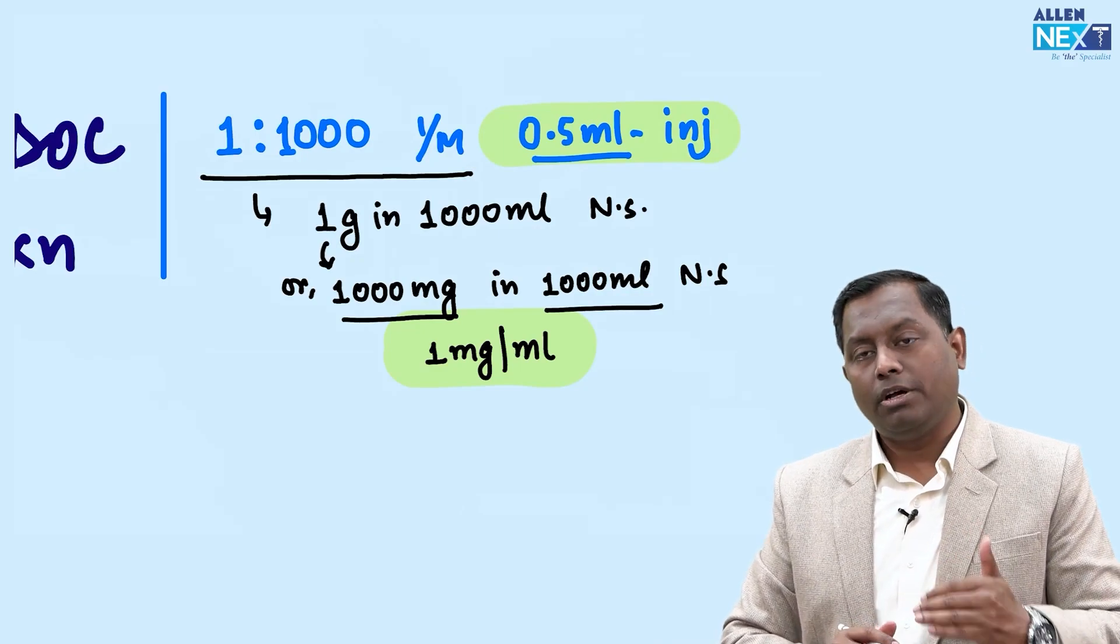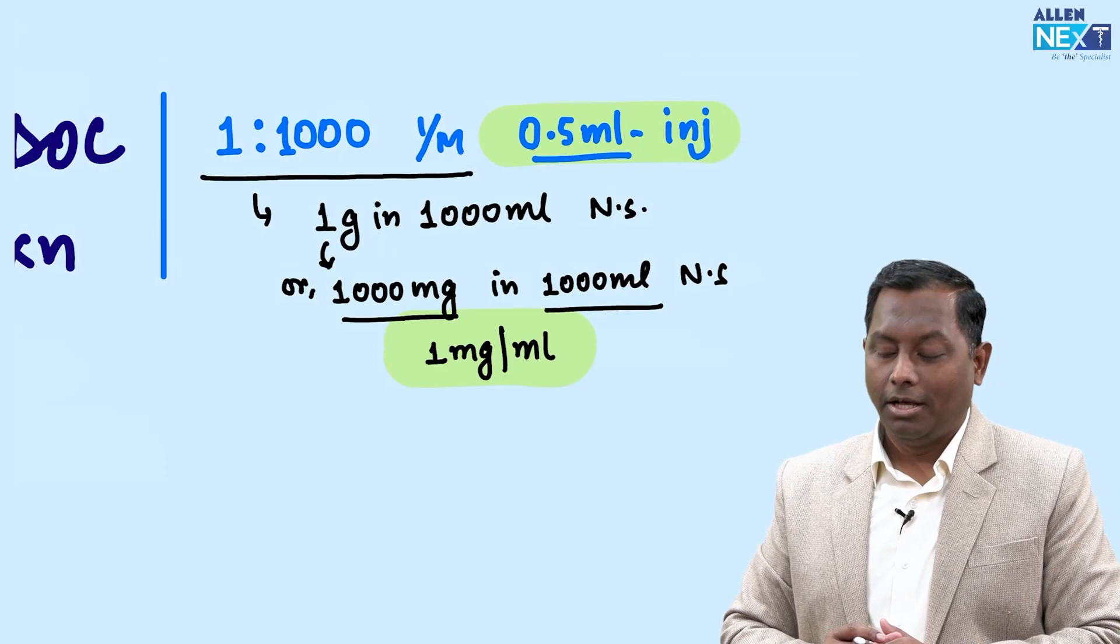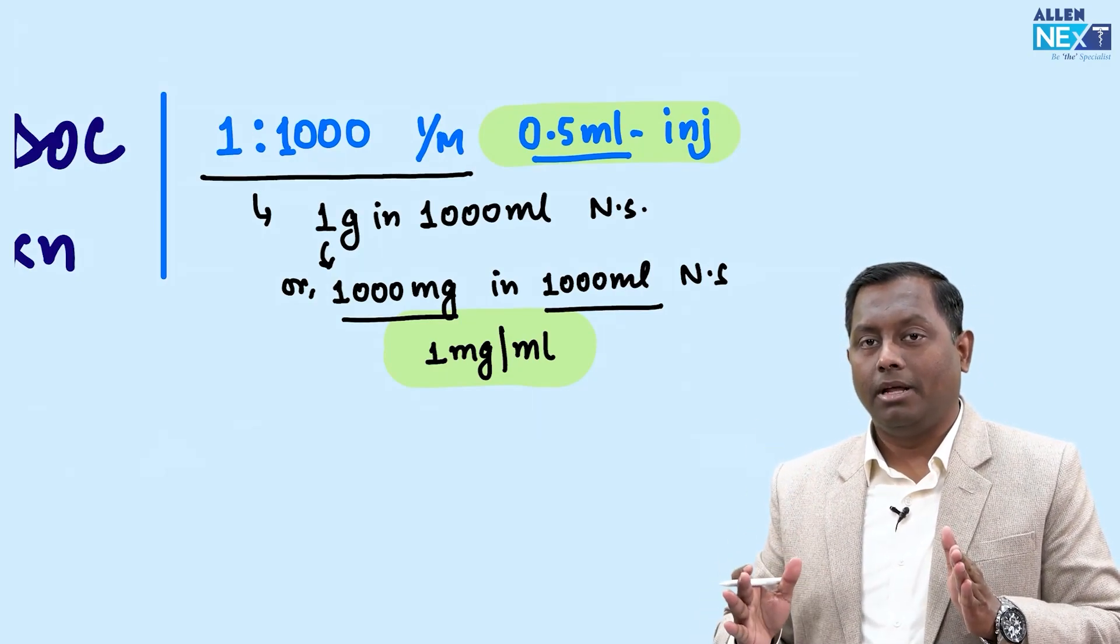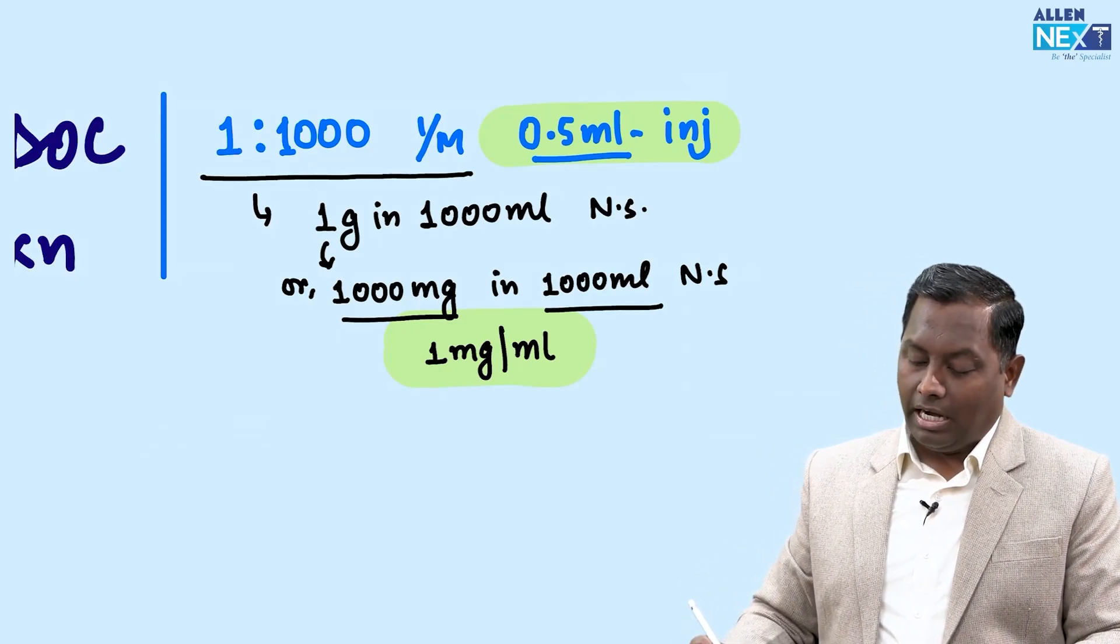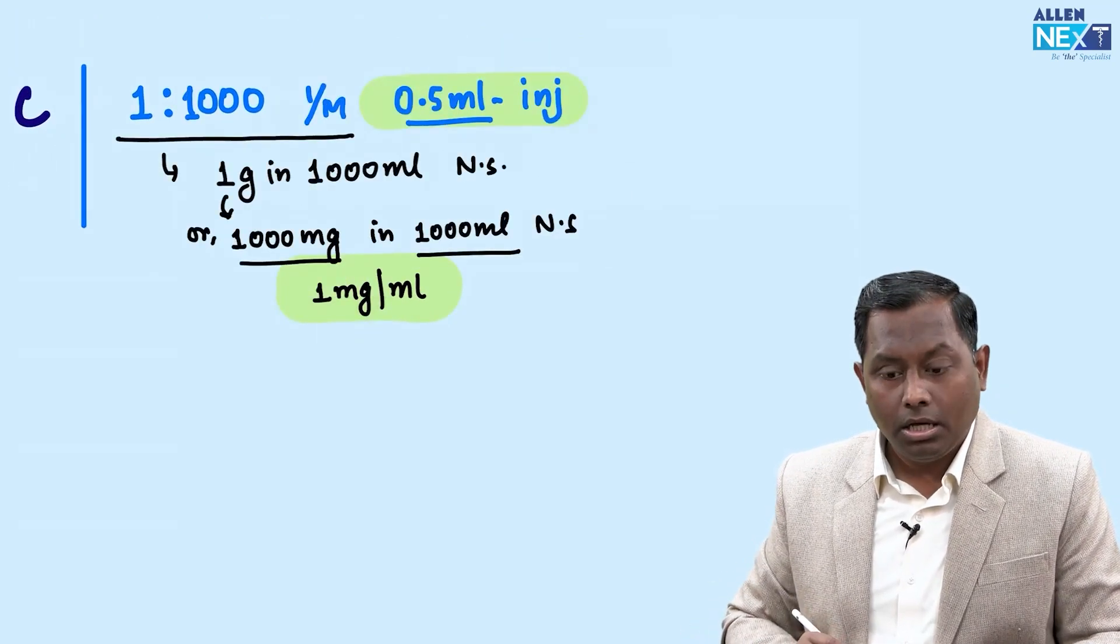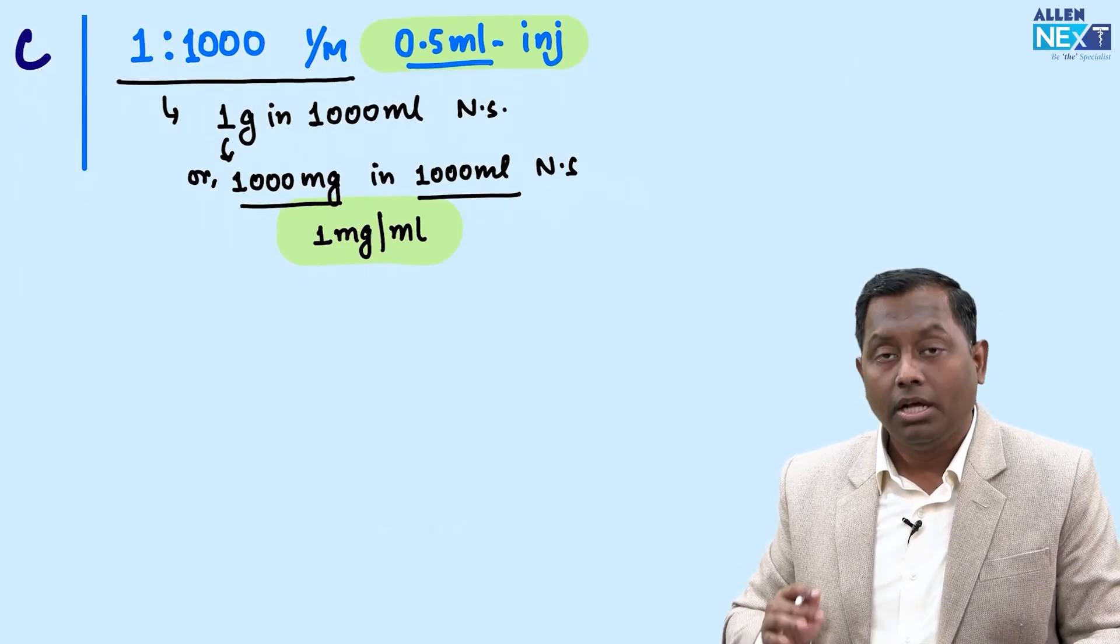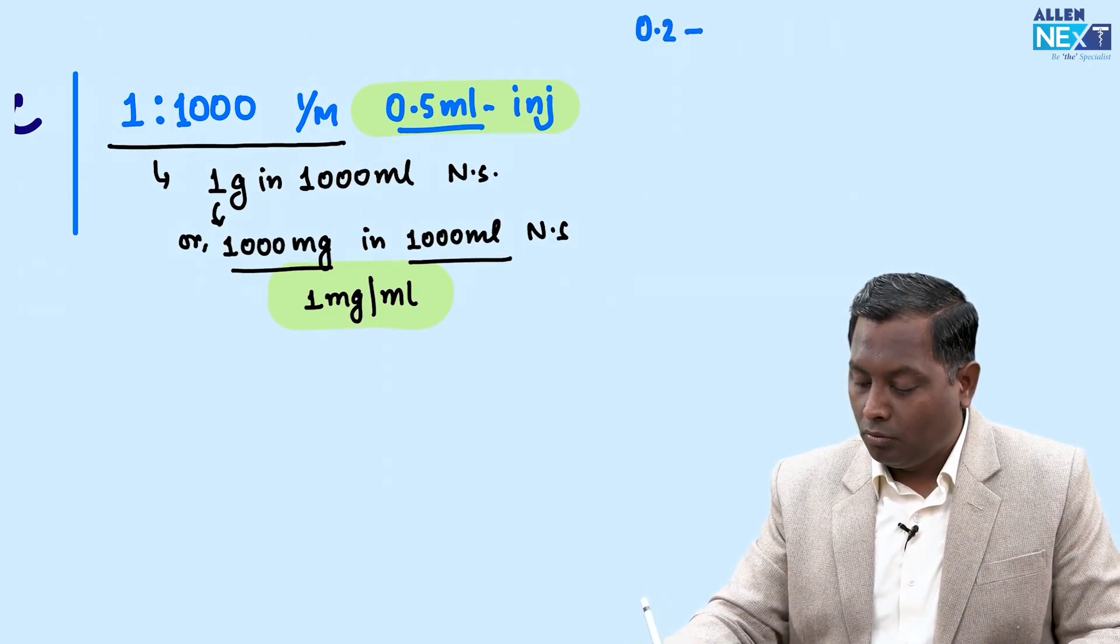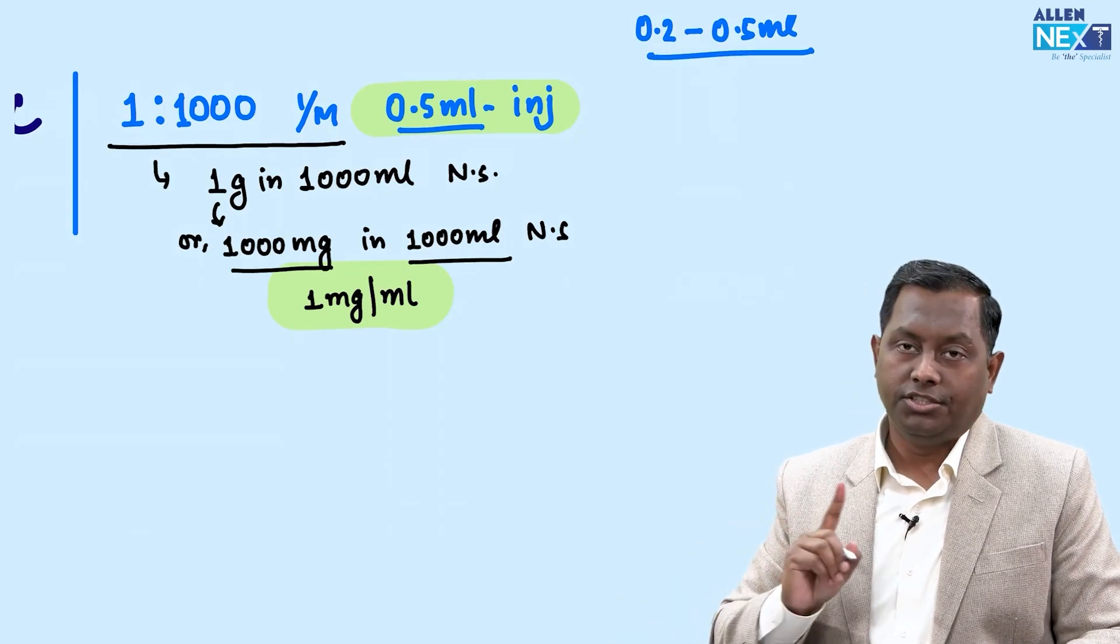The question comes: in 0.5ml, how many milligrams of drug will be injected? 0.5 milligrams. 1 milligram is in 1ml, so in half ml, half milligram will be there. The range given in textbooks is 0.2 to 0.5ml.